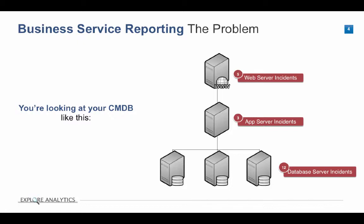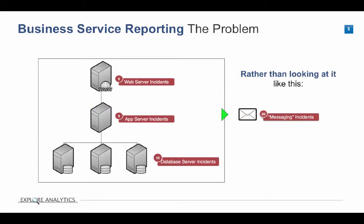ServiceNow has different layers of configuration items in the CMDB, and often incidents, problems, or changes are associated to individual configuration items. You might have incidents open against web servers, app servers, database servers, and other types of infrastructure. What Explore Analytics does is roll those incidents up to a parent business service. For example, if all of these CIs are mapped to the messaging business service, we automatically roll up to that service so you can see how many messaging incidents there were.